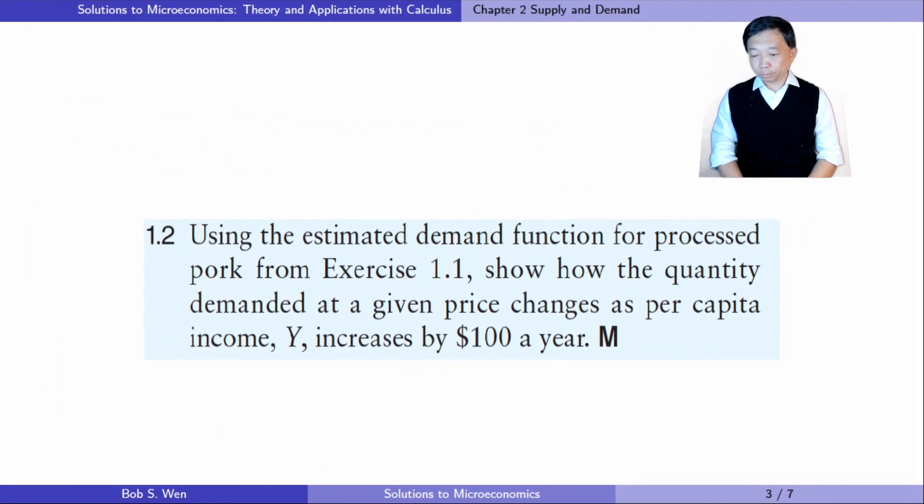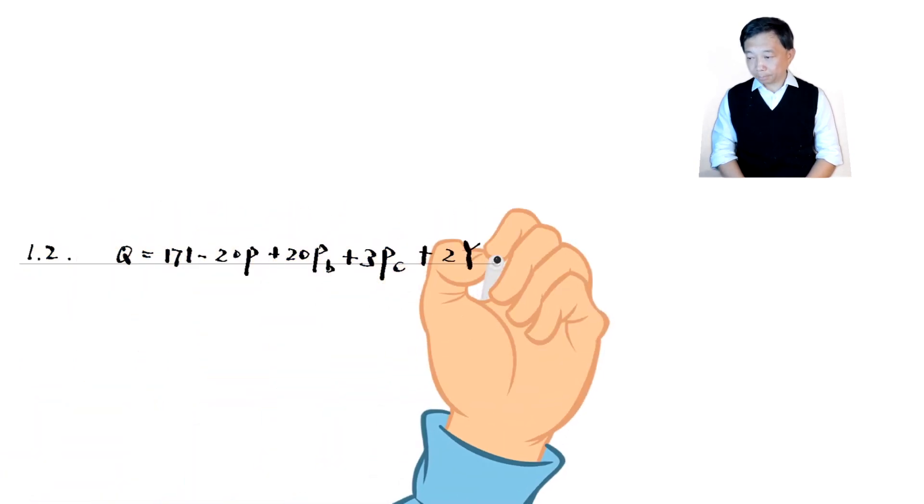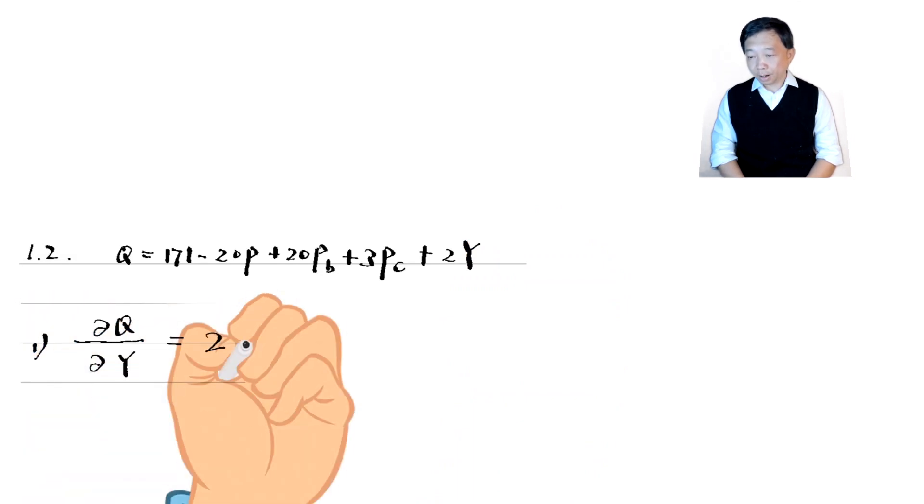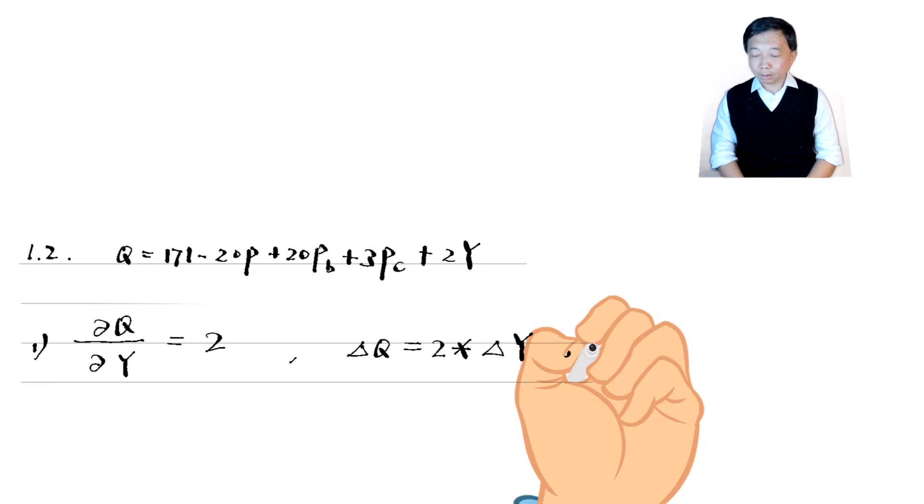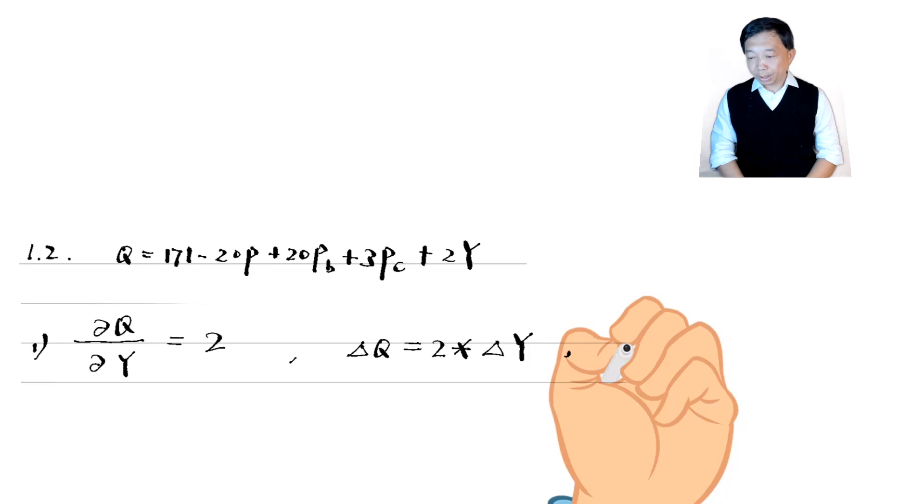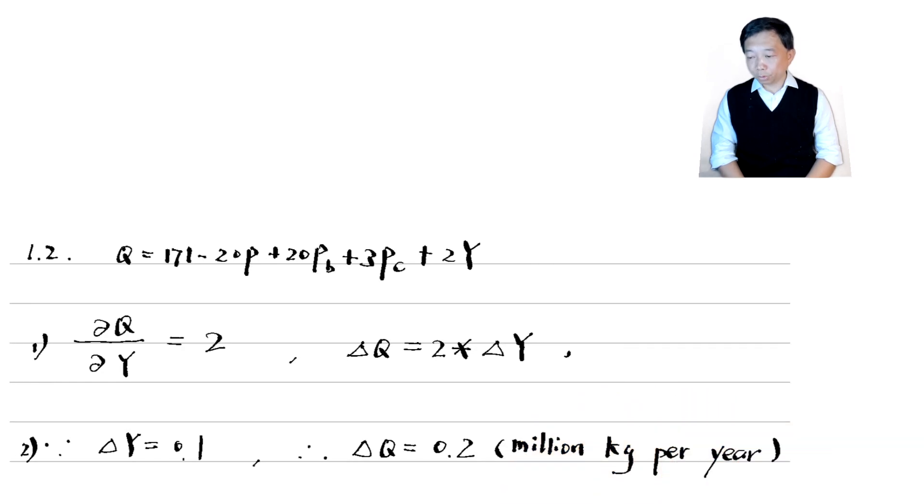Let's do exercise 1.2. Using the estimated demand function for processed pork from exercise 1.1, show how the quantity demanded at a given price changes as per capita income y increases by $100 a year. We take the first derivative of quantity demanded with respect to the income to find the marginal change in quantity as income increases by one unit, holding the other variables constant. It is 2, meaning that as income increases by one unit, the quantity demanded increases by two units. The change in income is $100. Notice that the unit of income is $1,000. Then we have the answer of 0.2 million kilograms per year.